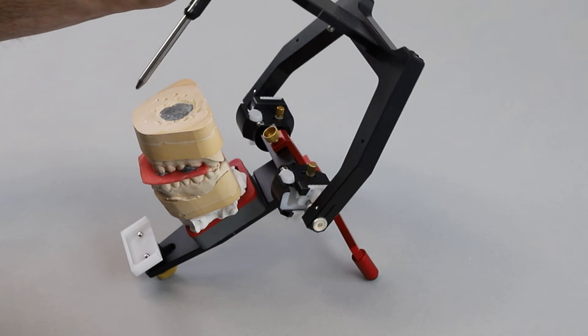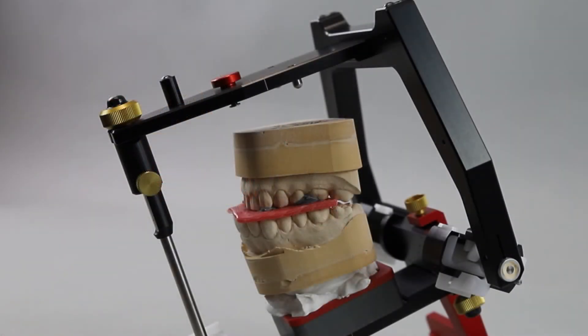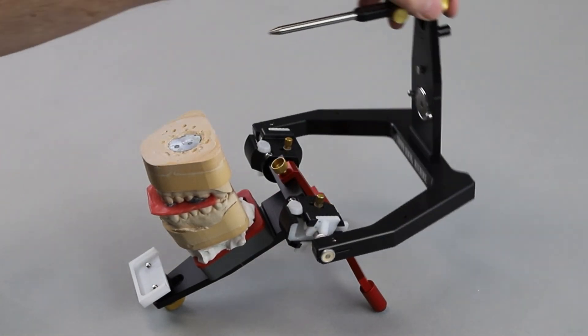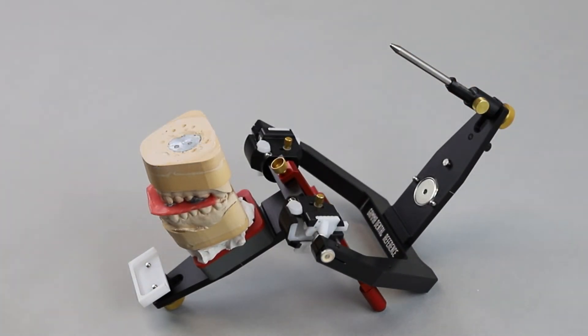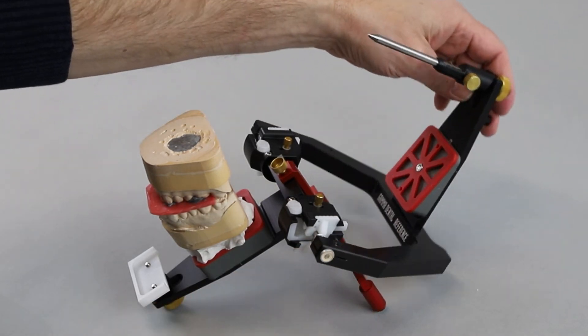Select the distance block for the lower jaw equally as for the upper jaw. Open the articulator and insert the distance block with a previously attached mounting plate. The selected distance block is inserted in the articulator.